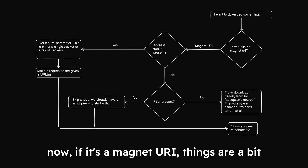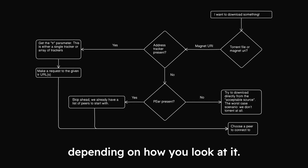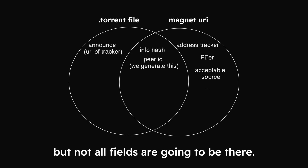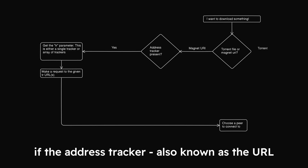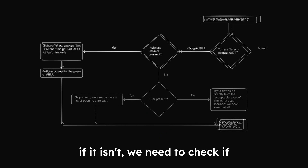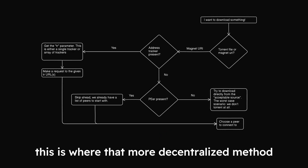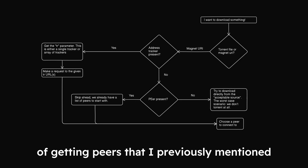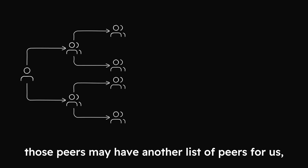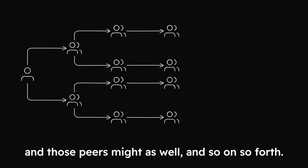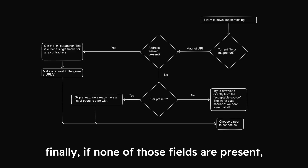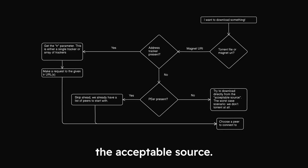If it's a magnet URI, things are a bit simpler or more complex depending on how you look at it. A magnet URI has similar fields to a .torrent file, but not all fields are going to be there. If the address tracker — also known as the URL or IP to the tracker server — is there, we can just make a simple request to it and move on. If it isn't, we need to check if there is a list of peers to start with. This is where that more decentralized method of getting peers plays in — it's called DHT. If we're given a list of peers to start with, those peers may have another list of peers for us, and those peers might as well, and so on and so forth. If none of those fields are present, we can attempt to download from the acceptable source, ensuring the user can at least download a file if nothing else works.